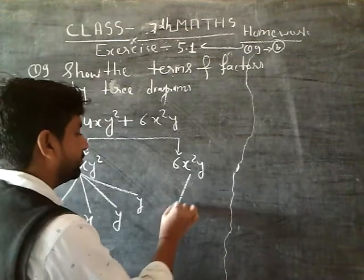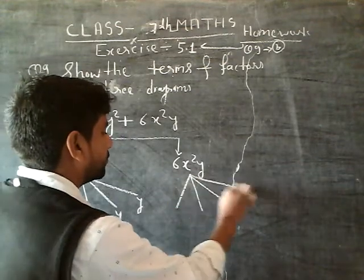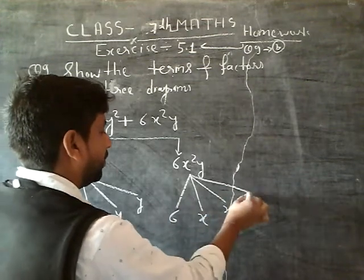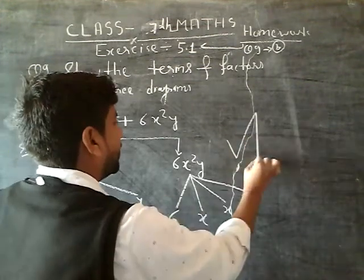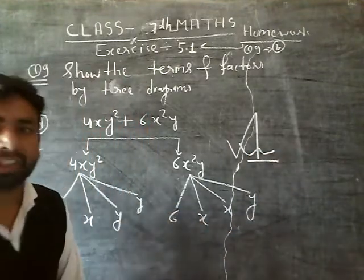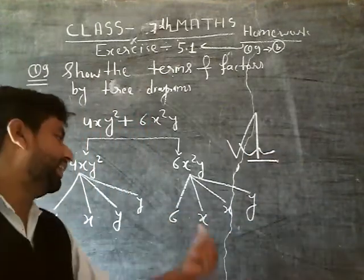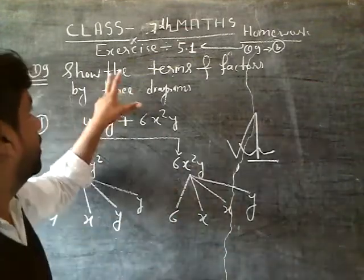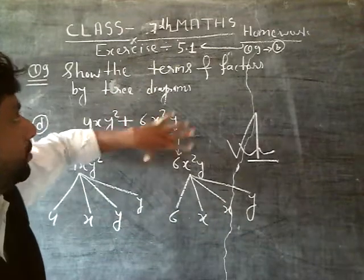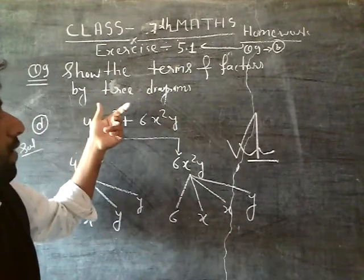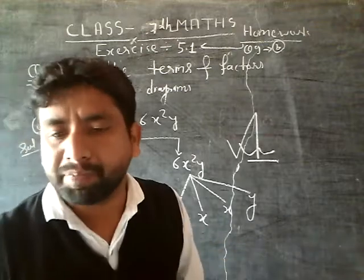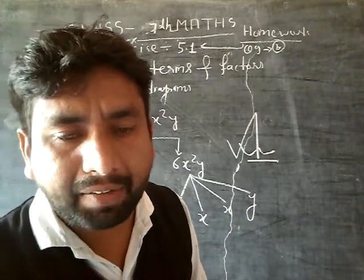Second one is 6. In this how many X? 2X and Y. This is your answer. Some students might think sir, should we factor 6 also? You can do that too. So this is terms separated, these are the terms, these are the factors. Factors by tree diagram, this is the tree diagram.